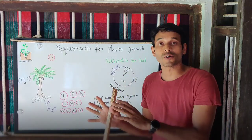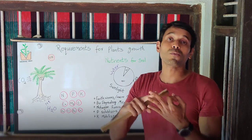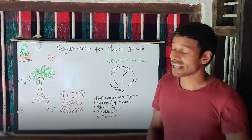95% of plants growth happens with sunlight, carbon dioxide and water. The limiting factor which is a 5% comes in the form of macro and micronutrients.